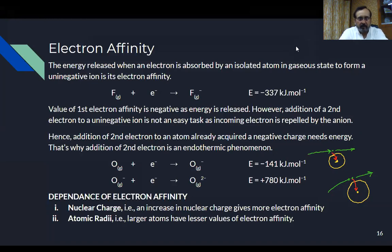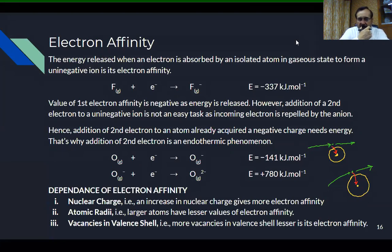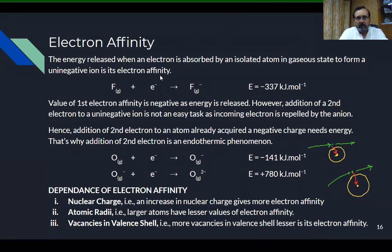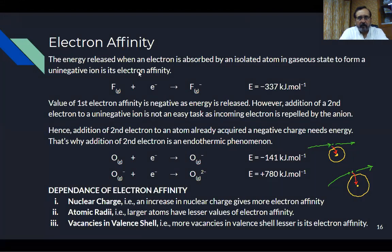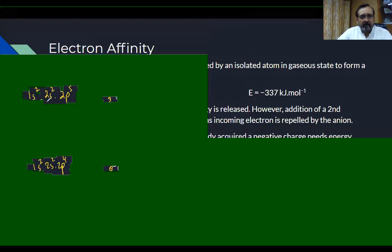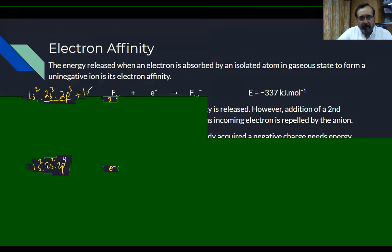The third factor is vacancies in the valence shell. Fluorine's electronic configuration is 1s², 2s², 2p⁵ — atomic number 9 — so it has only one vacancy in the valence shell. Oxygen's atomic number is 8, configuration 1s², 2s², 2p⁴, so it has two vacancies in the valence shell. Fewer vacancies means higher electron affinity.